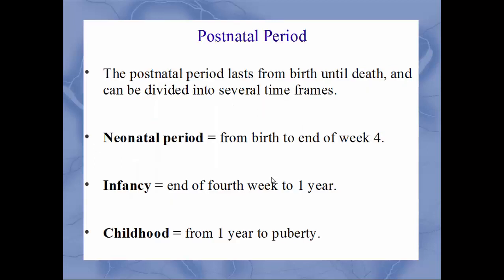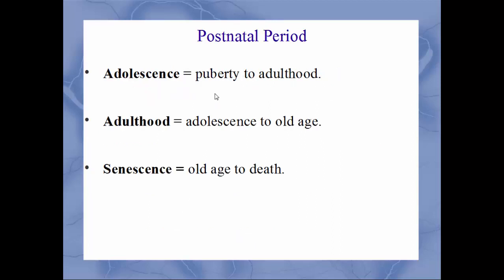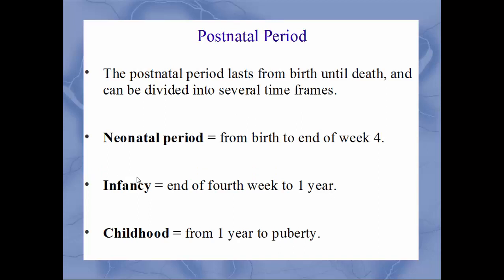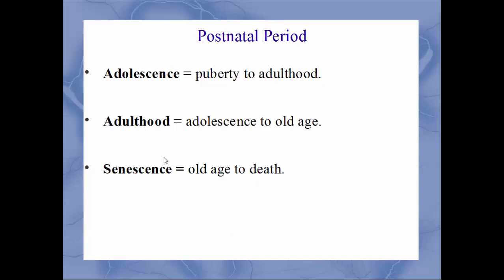The postnatal period — from the minute the baby is born until that person dies — is divided into various time frames. The neonatal period (neo means new, basically a new baby) is from birth to the end of week four — the first month of that baby's life. Infancy is from the end of that first month to the end of the first year. Childhood is from year one to puberty. Adolescence is from puberty to adulthood. Then adulthood to old age. The last one is called senescence — old age to death. Of course, all of these will vary greatly, especially adolescence, adulthood, and senescence, depending on the person.